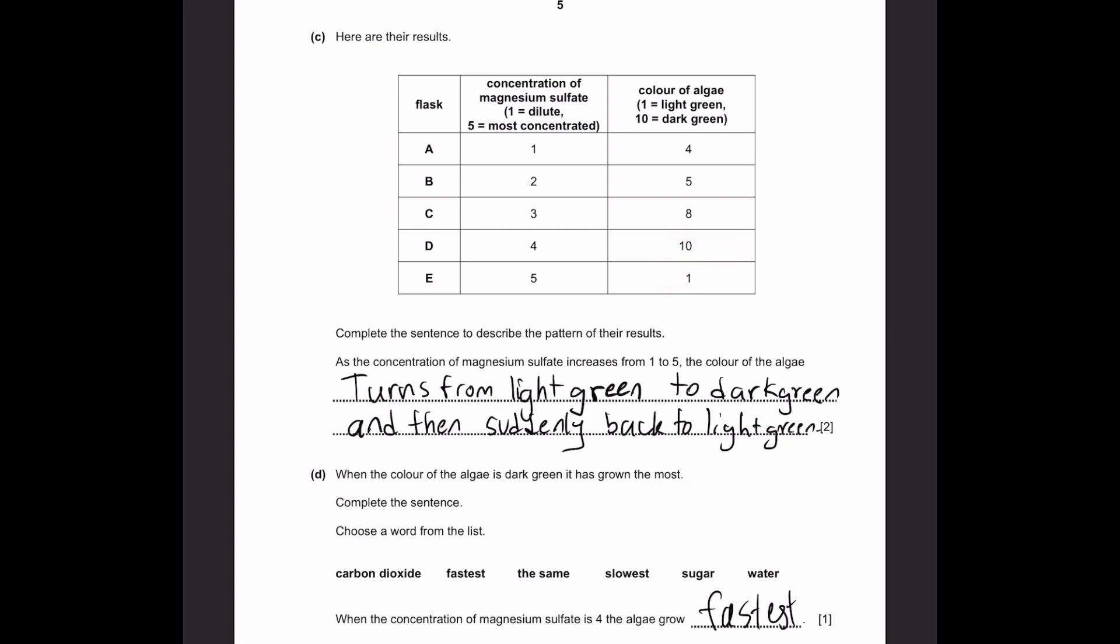Part D. When the color of the algae is dark green, it has grown the most. Complete the sentence. When the concentration of magnesium sulfate is four, the algae grow fastest. This is because dark green color means the algae has grown the most, and ten is dark green at concentration four.